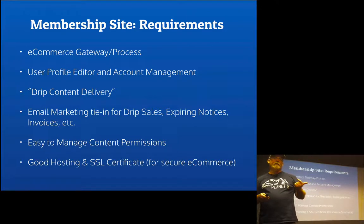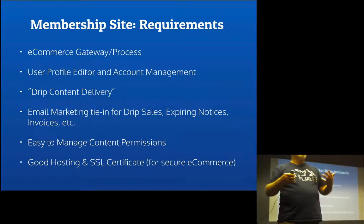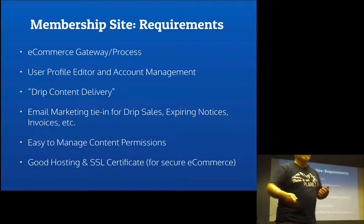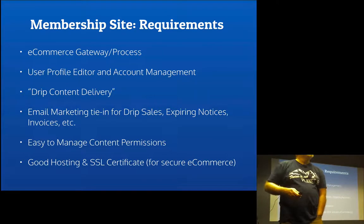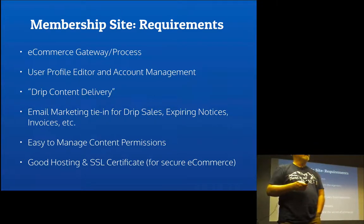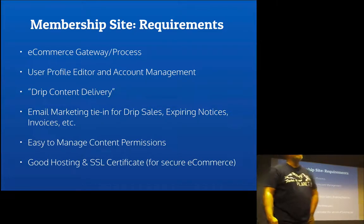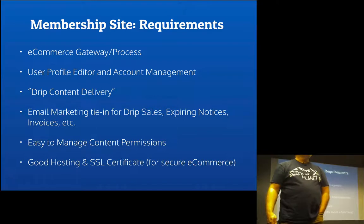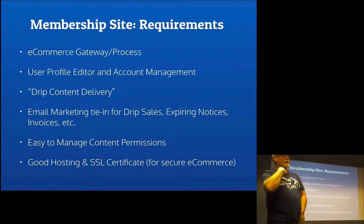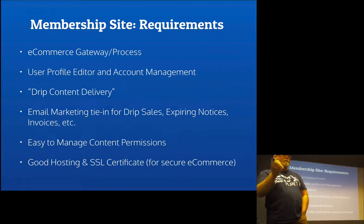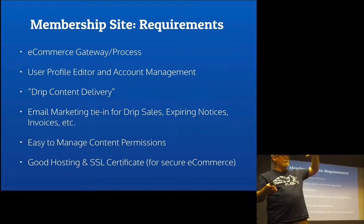It needs to be able to handle drip content delivery — all the teasers, the 30 seconds of a video, the first chapter of a book. Drip content — to clarify — is to prevent people from taking all the restricted content at once. It makes sure they only get so much based on membership level at a certain time. So you get maybe 10% of it the first two weeks, a bit more the second two weeks, and by the time you get access to all of it, you've been a member long enough that it's not a concern.